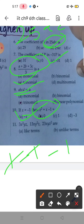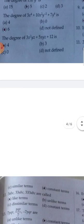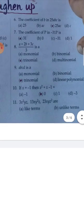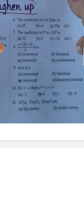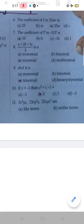Now, these terms are unlike terms. So 11th, option number B. These are unlike terms, option number B aega.